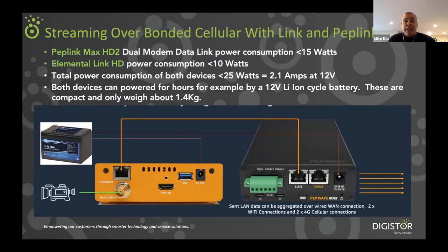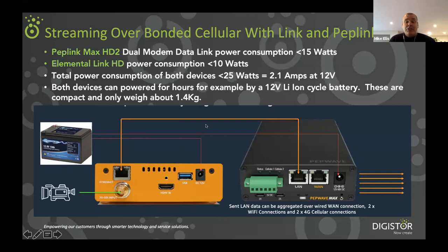What this might look like in practice is that the Peplink unit is a ultra compact unit, similar size to the Link device itself. Both devices have DC power, total power consumption for both devices is less than 25 watts. So you can buy a 12 volt lithium ion deep cycle battery from JayCar or your favorite electronics store for about 70 bucks — weighs about 1.4 kilograms — and that could power these units for about six hours. That's a 12 amp hour battery. So easy to set up a small wireless setup with DC power that you can then really stream from anywhere.